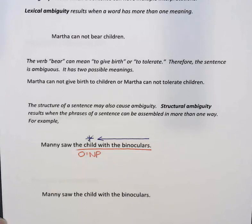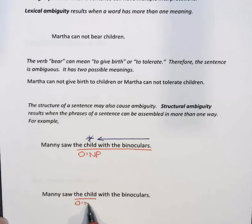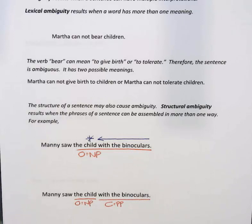It's also possible to think that Manny had the binoculars, and that's why he could see the child — maybe the child was far away. In that interpretation, 'the child' is the object, and 'with the binoculars' is the complement in the sentence.